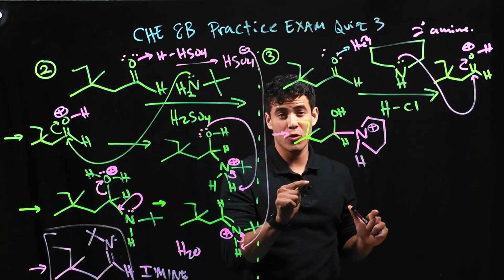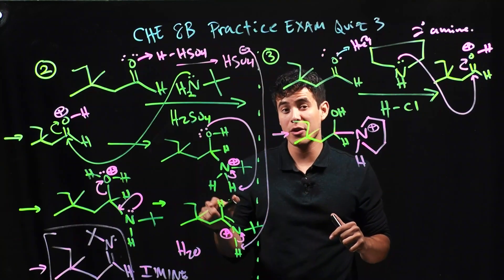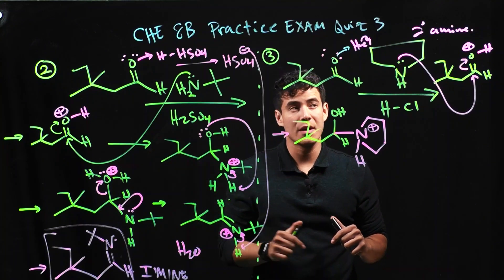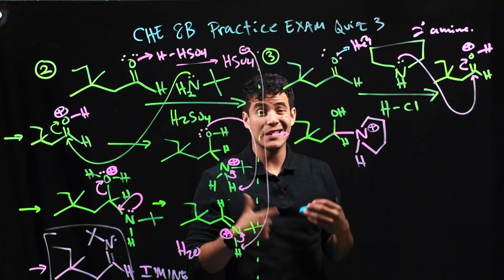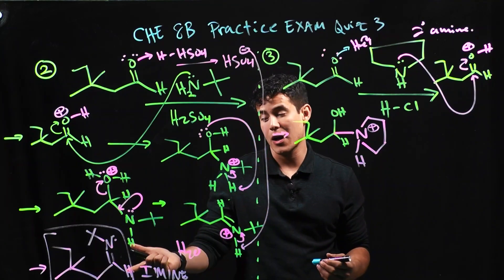When you have a secondary amine, you're not going to be able to form the imine like you can get in a primary amine or an ammonium. So notice, we have a secondary amine, so we're going to get a different product this time than our imine.